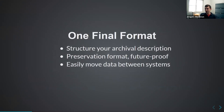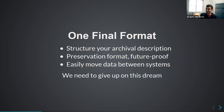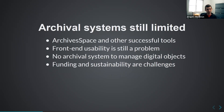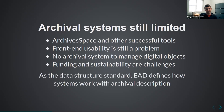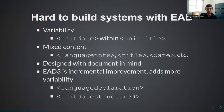The original promise was one final format — once you encoded your description, you're good. It would be structured, future-proof, and you'd be able to easily move it between systems. I don't want to undermine the success of EAD — it has been really successful in making our description usable in many ways — but we've also found it's kind of limiting. I think we really need to give up on the dream of one final format forever and embrace a common data model instead. Our archival systems are still kind of limited. ArchivesSpace and some other successful tools exist, but front-end usability for archival description is still a problem.